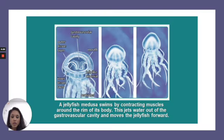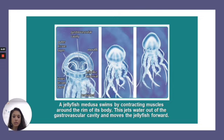A jellyfish medusa swims by contracting muscles around the rim of its body. This jets water out of the gastrovascular cavity and moves the jellyfish forward.